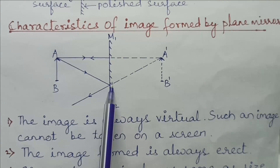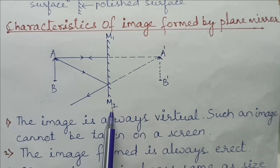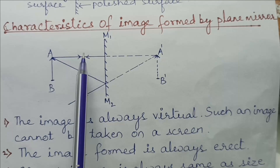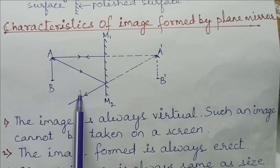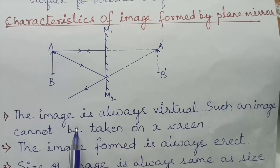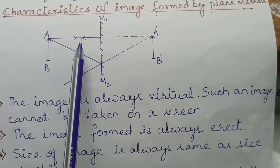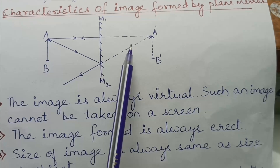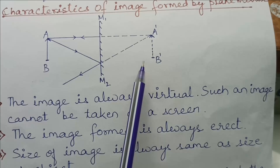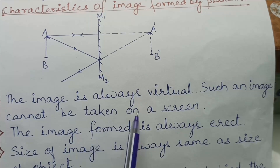For that we have taken a plane mirror M1M2 in front of which an object AB is placed. We need a minimum of two light rays in order to form an image. The image is always virtual — the light rays actually do not meet at a point, and for that reason the image formed is virtual. Such an image cannot be taken on a screen.